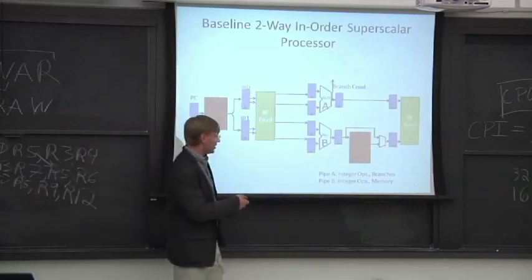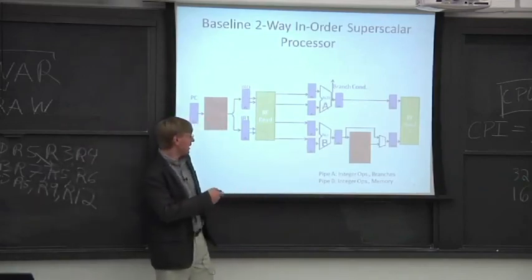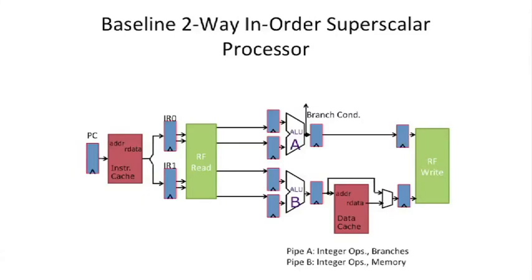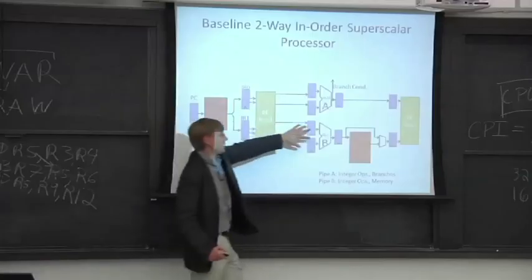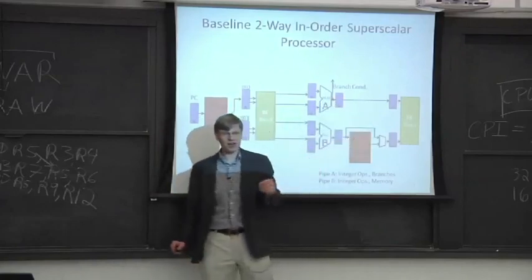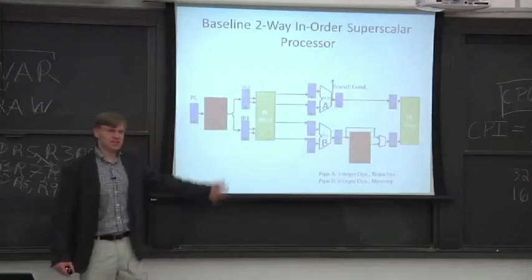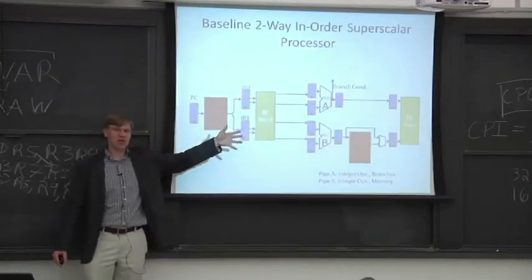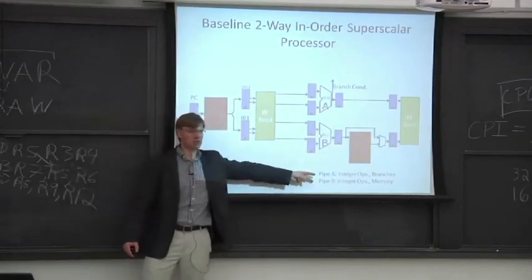Drawn here, we're going to actually differentiate these two pipes. We're going to call this pipeline A and this pipeline B. And pipeline A can do integer ops and branches. And pipeline B can do integer ops and memory access. But you can't do memory up here and you can't do branches down there. There's nothing fundamental. We're just going to look at this basic example here and have two asymmetric pipelines.